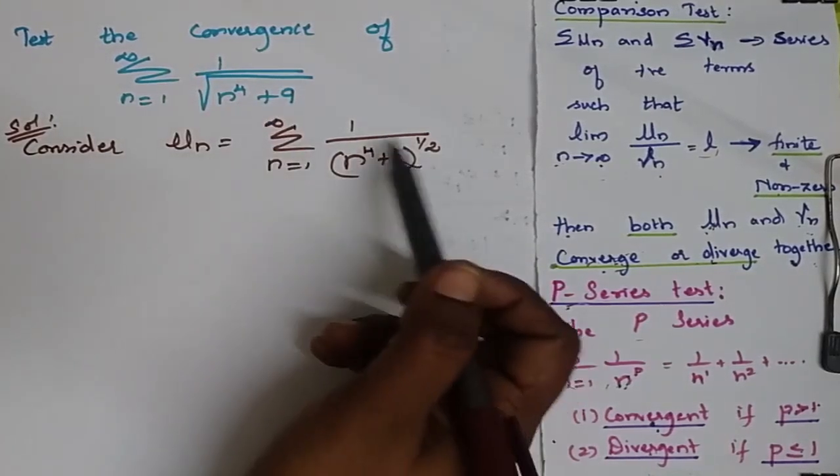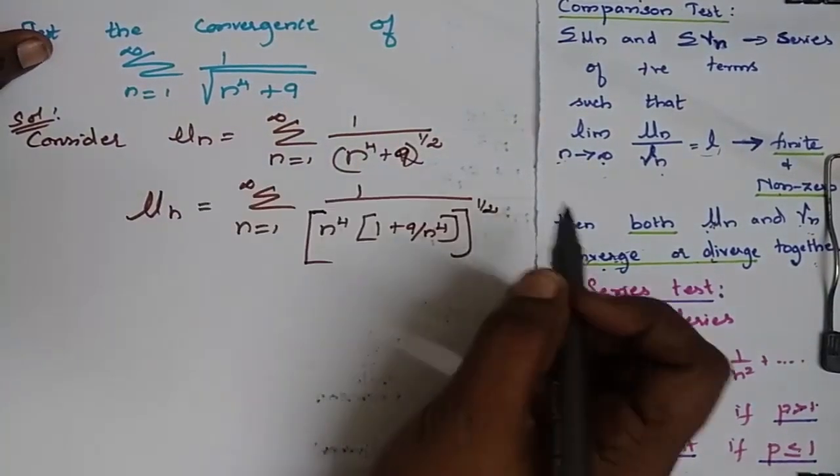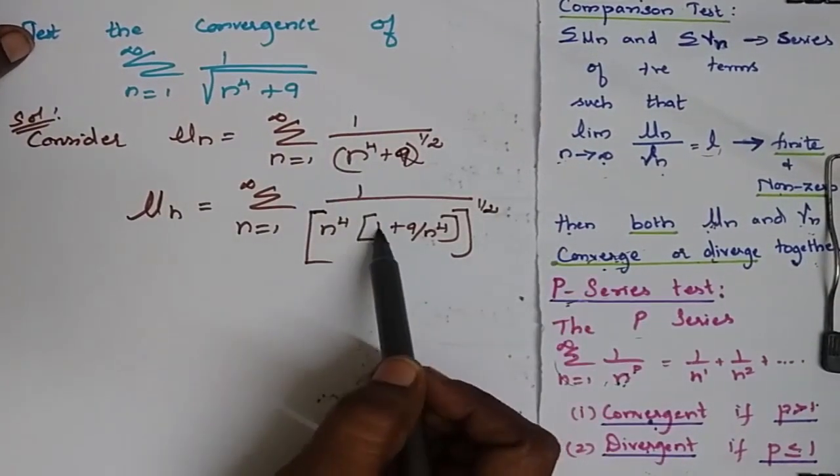Now consider un equal to this. I am going to simplify this. So my un is... Here I have taken n to the power 4 common out.